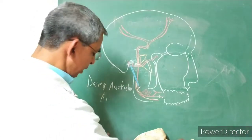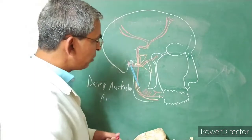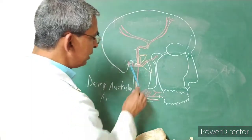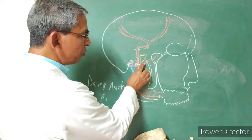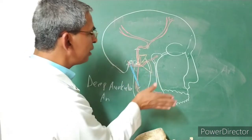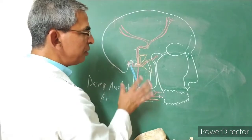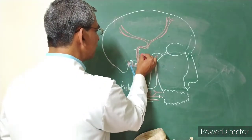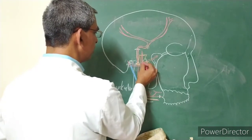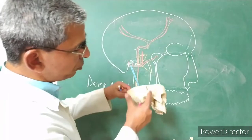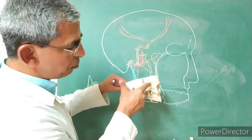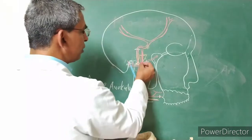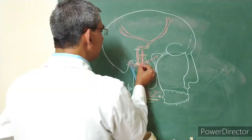Now for the second part — the pterygoid part — it gives muscular branches. Four branches come from this part. The first is the deep temporal arteries, which pass into the temporal fossa between the temporalis muscle and the skull bone, supplying the temporalis muscle.